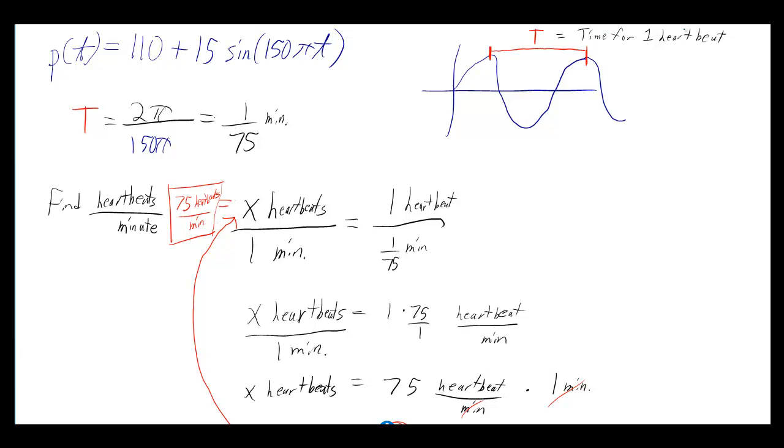So if you have the pressure as a function of t equals 110 plus 15 times sine of 150 pi t, the period equals 2 pi over 150 pi, which is 1/75, and the units are minutes, so it's 1/75 of a minute.